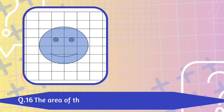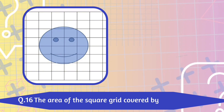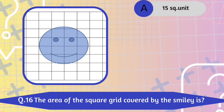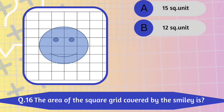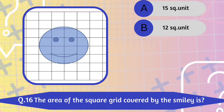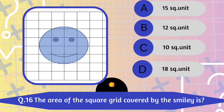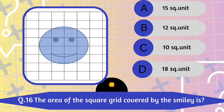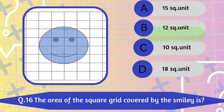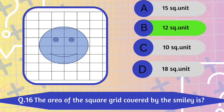Question number 16. The area of the square grid covered by the smiley is: A. 15 square unit. B. 12 square unit. C. 10 square unit. D. 18 square unit. 12 square unit is the correct answer.